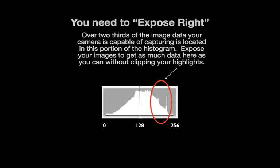A little-known fact about digital cameras is that over two-thirds of the image data your camera is capable of capturing is located in this portion of the histogram. So it logically follows that you want to expose your images to get as much data here as you can without clipping your highlights.